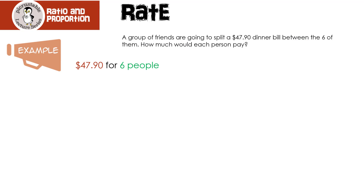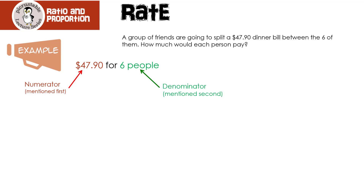Let's look at an example. A group of friends are going to split a $47.90 dinner bill between the six of them. How much would each person pay? So we're looking at $47.90 for six people. Just like a ratio, we rewrite the first number as the numerator, and the second number becomes the denominator.